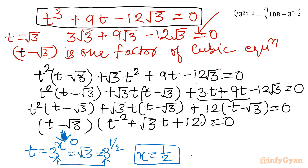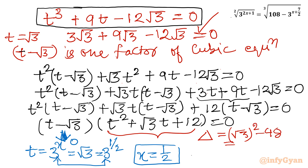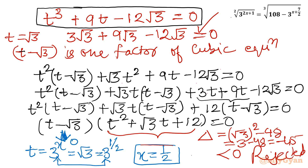Now let us consider the quadratic bracket: t squared plus root 3 t plus 12 equals 0. I will calculate the discriminant delta equals b squared minus 4ac, which gives root 3 squared minus 4 times 1 times 12, so 3 minus 48, equals negative 45. Because the discriminant is negative, there are no real solutions from this bracket, so we reject it. Therefore only one real solution exists: x equals one half.